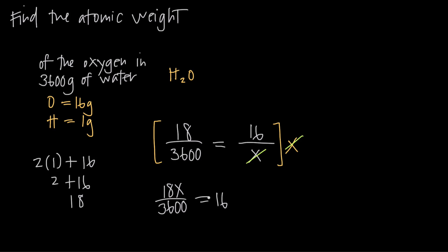Now, my next step would be to multiply both sides by 3,600. But before I do that, I need to notice that I can actually reduce this fraction on the left. I have 18 over 3,600, and I can divide 18 into both of those. 18 divided by 18 just leaves me with 1, so I'll just be left with X in the numerator. 3,600 divided by 18 is 200, so I'm going to have X over 200 is equal to 16.